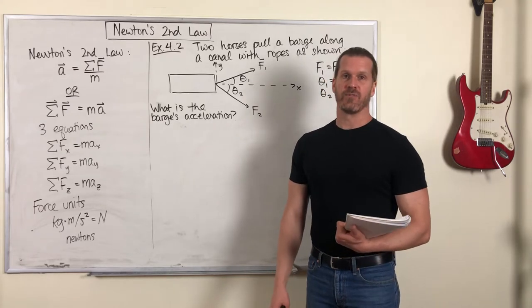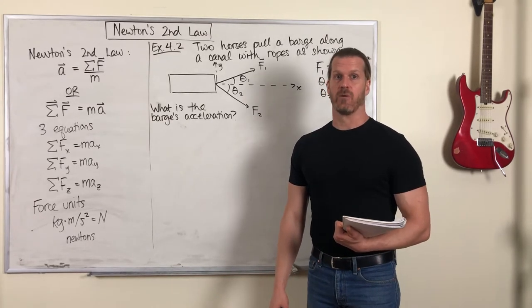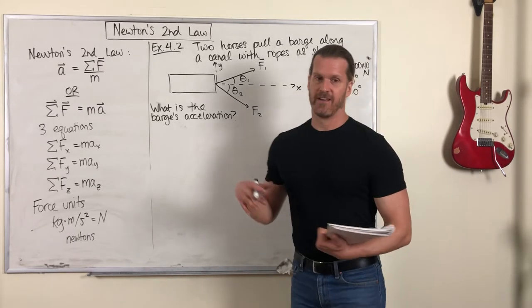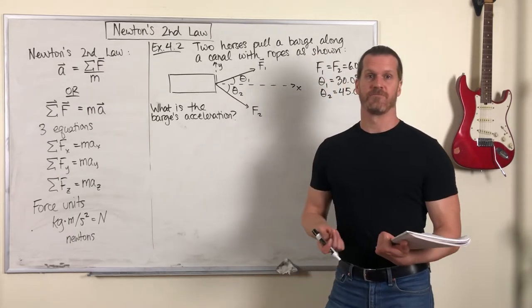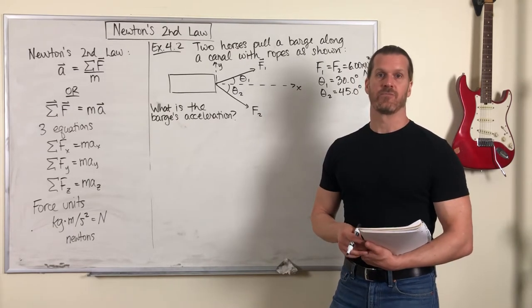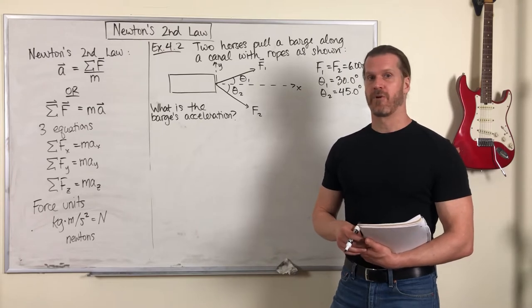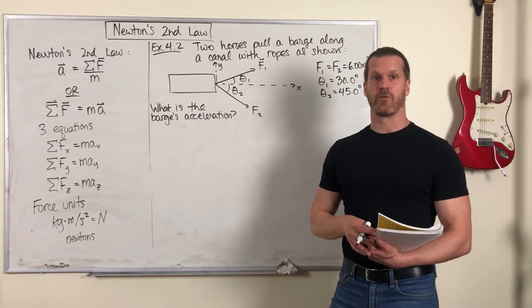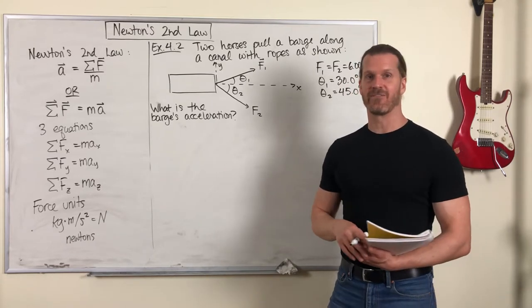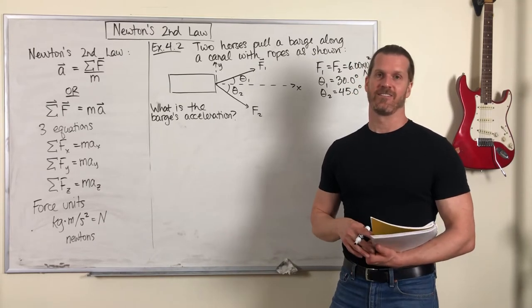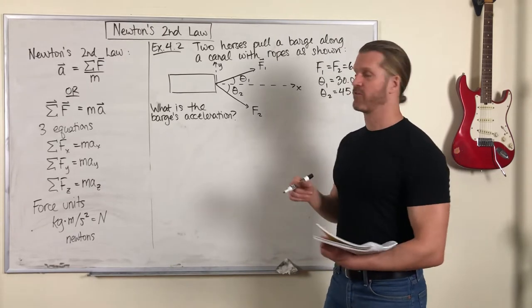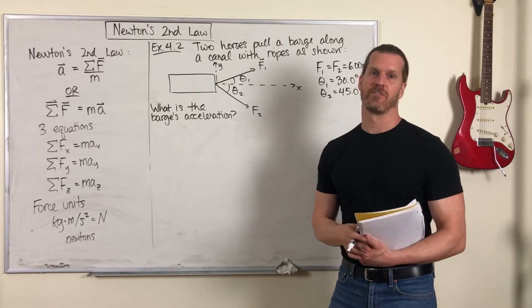Here's another Newton's Second Law example that's a 2-D problem. So in this scenario you have a barge, a boat used for transporting goods, floating on a canal. There are two horses standing on either side of the canal with harnesses and ropes attached to the barge, and those two horses are pulling the barge along the canal.